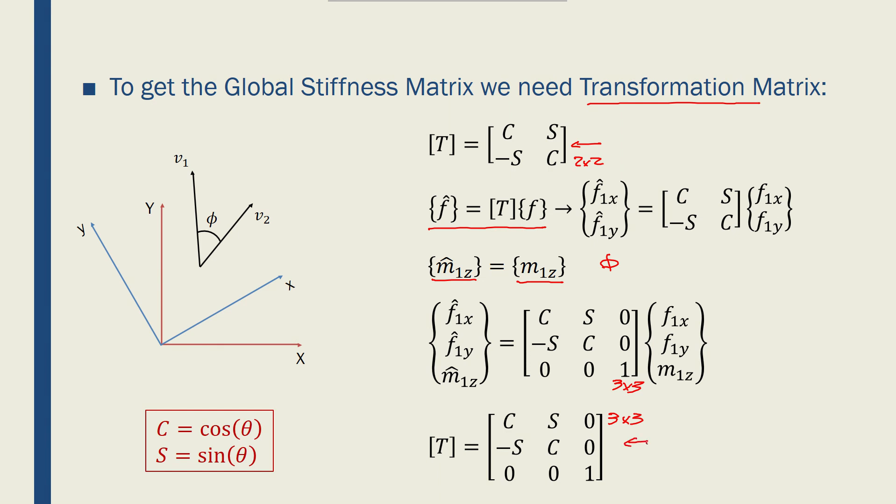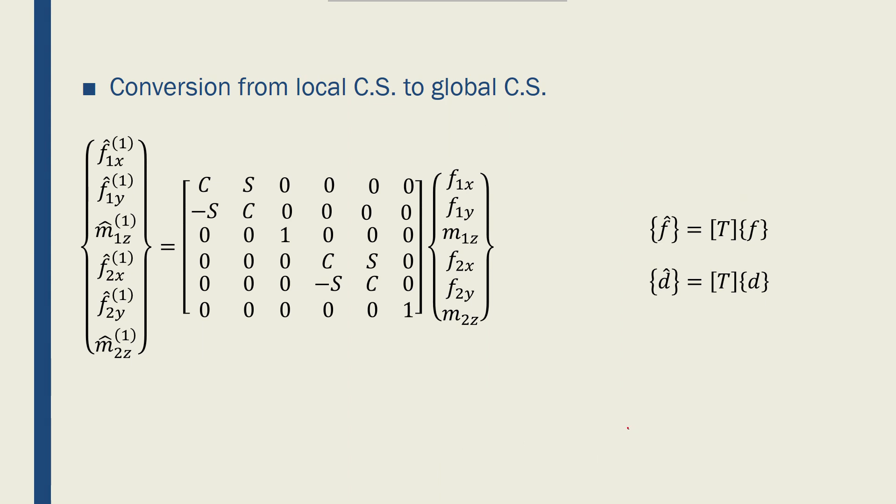But this is only written for one node. Now I can expand that to consider both nodes in a typical frame element, because I have six forces: fx, fy, and mz per node, and I have their global counterparts. So if I write f1x, f1y, m1z, f2x, f2y, m2z,